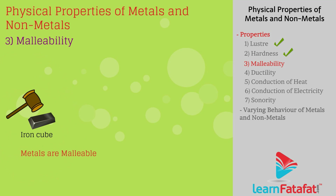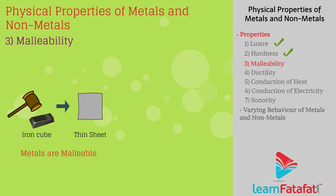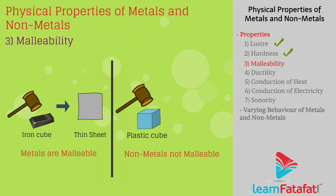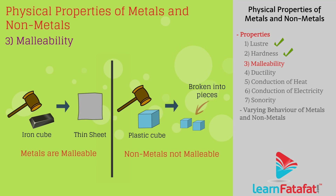Malleability: Metals can be beaten to form thin sheets. This property of metal is called malleability. For example, iron and zinc. Whereas non-metals, if beaten, break into pieces.